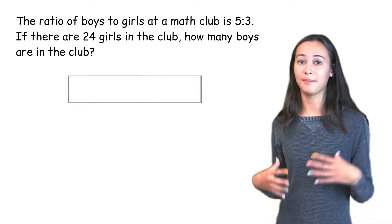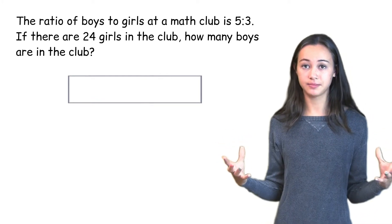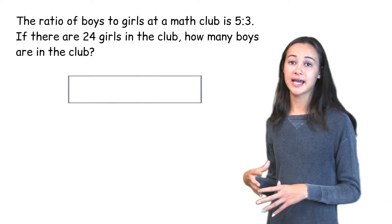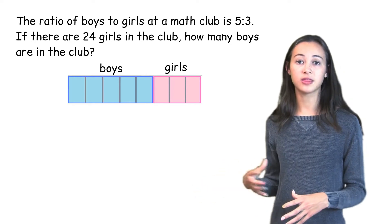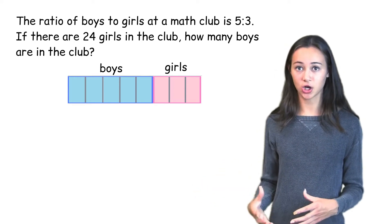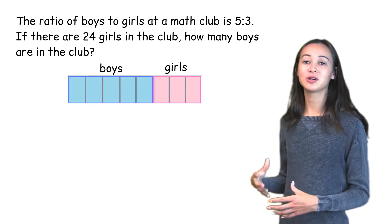Let's start with a big bar. This will represent the entire math club. Now we can divide the bar into 8 parts. 5 of them representing the boys and 3 of them representing the girls, with each box having the same number of students.